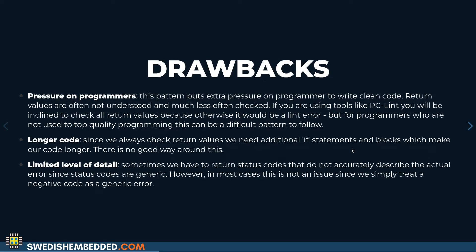The drawbacks of standardizing return codes is that it puts more pressure on programmers, because they need to always make sure they return the correct status codes — which is actually a good thing. You do get longer code because you need to check for errors in C code where functions return errors. Especially in safety-critical systems, you would want lint tools configured so they always check that you have verified the return value. Tools like PCLint can automatically detect and create an error if you don't check the return code.